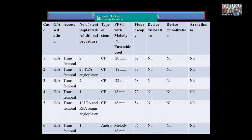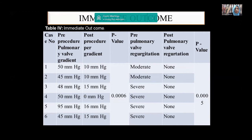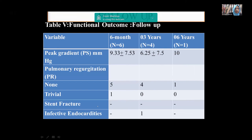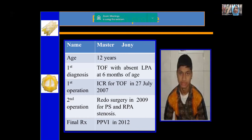Regarding results: the pre-procedure PS gradient ranged from a minimum of 45 mmHg to a maximum of 95 mmHg. Pulmonary regurgitation was moderate to severe quantitatively. RV end-diastolic volume was more than 140 mL/m² in all cases. General anesthesia was used for all cases. A CP stent was used as a landing station in most cases; only in one case was an Andra stent used. Post-procedure, the trans-pulmonary gradient was reduced in all cases, with a maximum gradient of 16 mmHg in one case only. Pulmonary regurgitation was eliminated in all cases. My cases are in follow-up now — the first case was done in 2012, giving nine years of follow-up, and all are doing well.